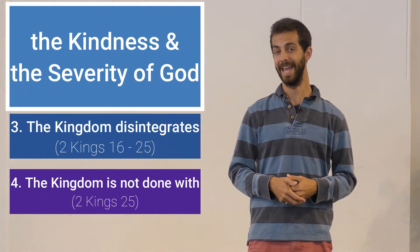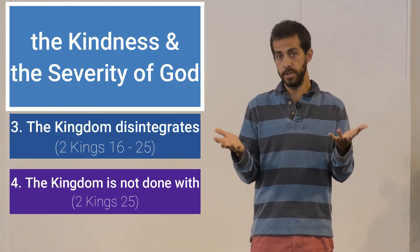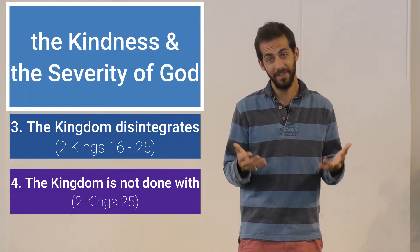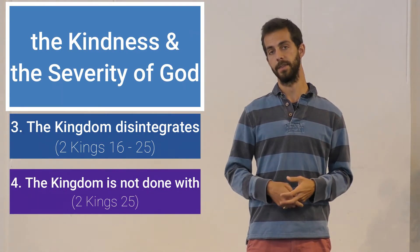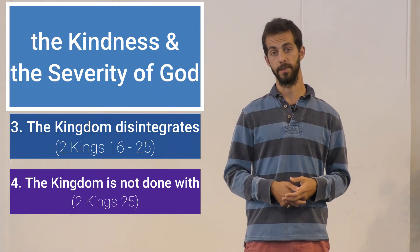When God acts to judge at the end of these books, 1 and 2 Kings, we don't think, how could God do that? We're left thinking, what took him so long? And the answer is the patience of God, the kindness of God, the grace of God.